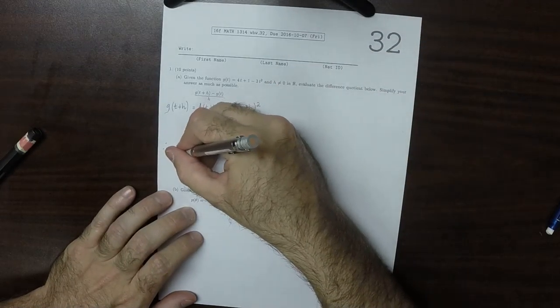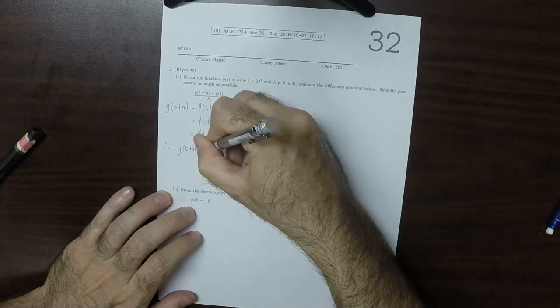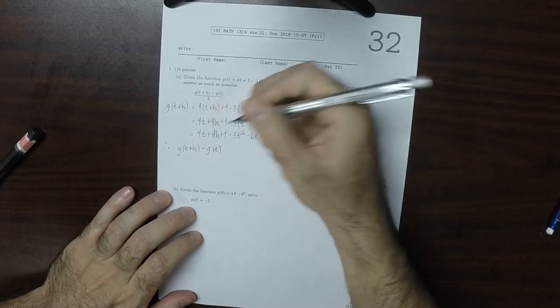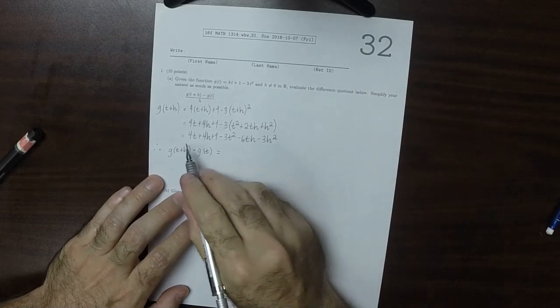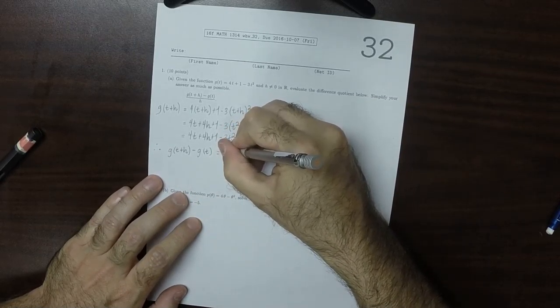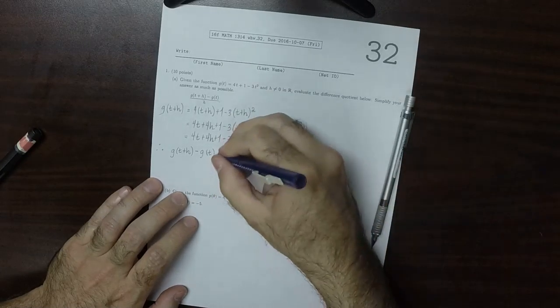So therefore, g(t+h) - g(t) is all of that. So 4t, I guess I'll go ahead and put it over h.